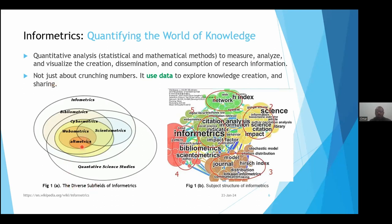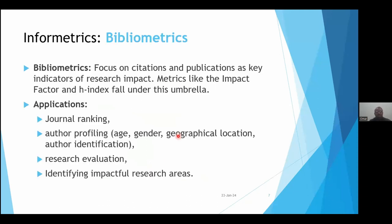There are various diverse subfields of informatics: bibliometrics, cybermetrics, webometrics, scientometrics, altmetrics, and some other quantitative science studies — these are overlapping fields. If we see the subject structure of informatics through a network prepared via CiteSpace, the picture shows major terms related with this domain. Cluster one shows network and h-index; cluster two shows science, information, bibliometrics, citation impact; and we also see journal h-index.